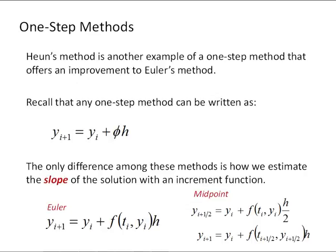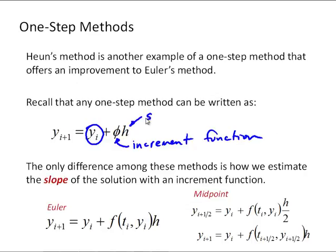Heun's method is another example of a one-step method that offers an improvement to Euler's method. Recall that for any one-step method, it can be written as y_i+1 equals y_i plus phi times h, where phi is the increment function. All of the one-step methods use only the value at y_i, the increment function, and the step size to predict the value at y_i+1. The only difference among these various methods is how we estimate that slope with the increment function.